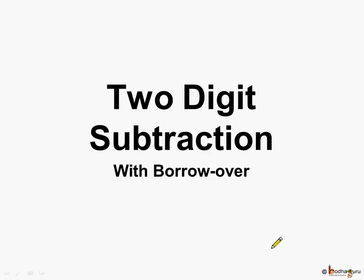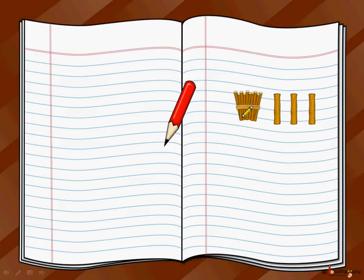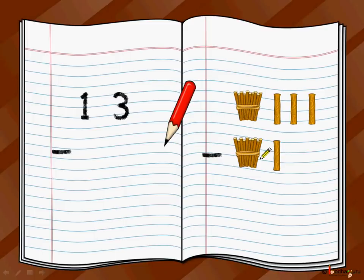Hello children, today we are going to learn more about two-digit subtraction. In the last video you learned how to do two-digit subtraction by breaking the problem into the subtraction of single digits. Let's take some examples. Say you have 13 sticks and from that you want to take away 11 sticks.